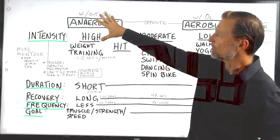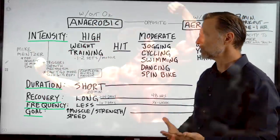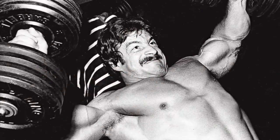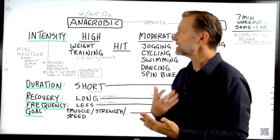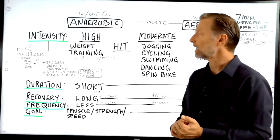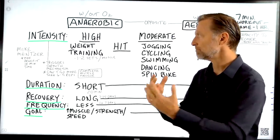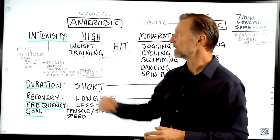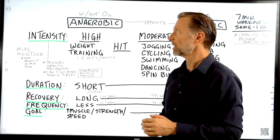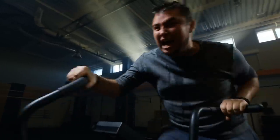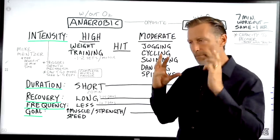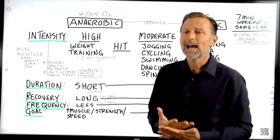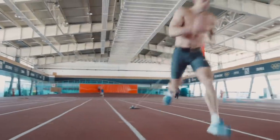Let's talk about anaerobic exercise. There is great information by Mike Mentzer, who was basically the first person to win Mr. Universe with a perfect score. He wrote multiple books and really talked about intensity training. He was all about maximum benefit and minimum time, and he talks about this variable — intensity — which is very important if you're trying to grow or maintain muscle. By high intensity, I mean using maximum effort to create complete muscle fatigue to the point where you cannot do even one more rep.